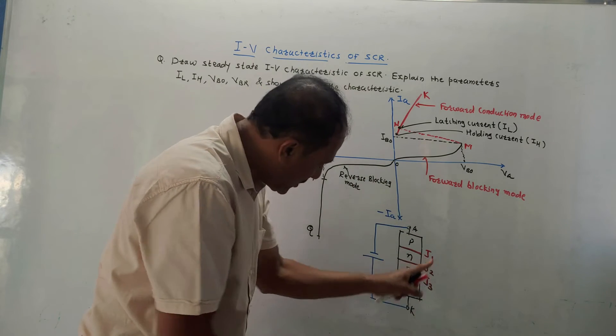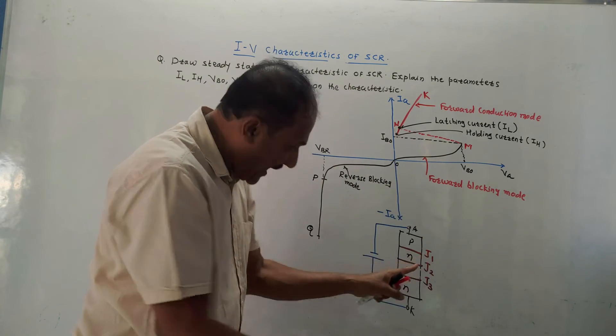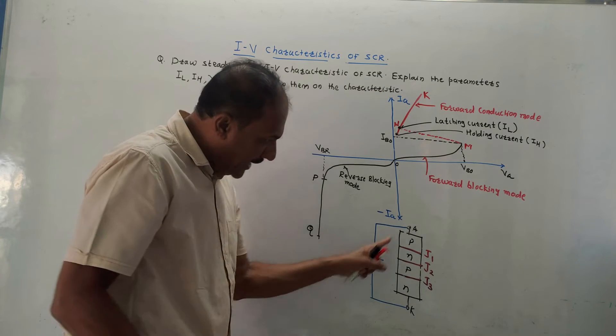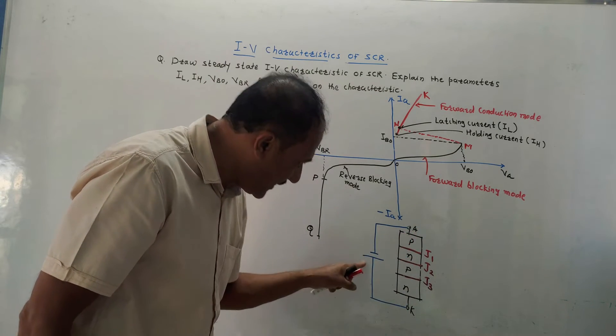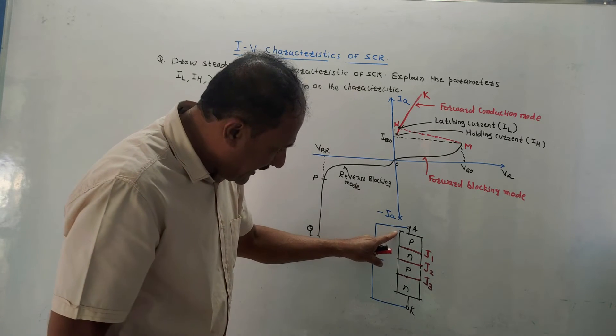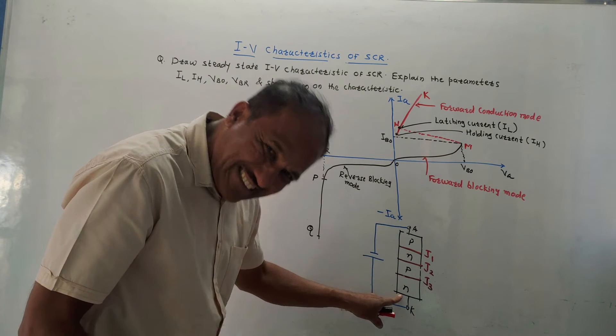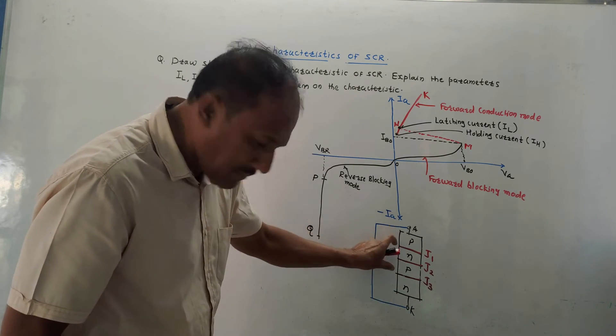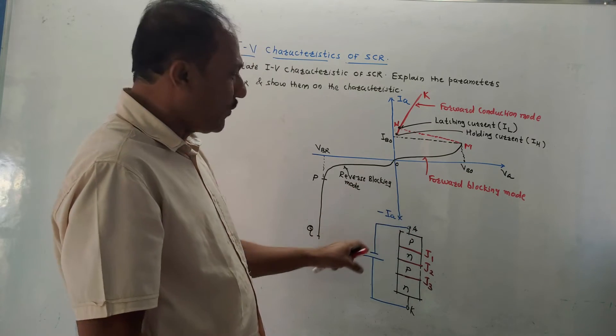That means three diodes are there having junction J1, J2, J3. Out of that, due to this connection, when anode is connected to negative and cathode is connected to positive, the first diode, let us say D1, and third diode, that is D3, are reverse biased, whereas middle diode, that is D2, is forward biased.